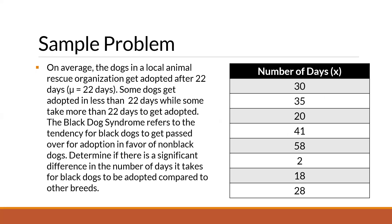So I adopted this problem from the textbook of Andrew Christopher. On average, the dogs in a local animal rescue organization get adopted after 22 days. So that is the population mean. Some dogs get adopted in less than 22 days, while some take more than 22 days. The black dog syndrome refers to the tendency for black dogs to get passed over for adoption in favor of the non-black dogs. Determine if there is a significant difference in the number of days it takes for black dogs to be adopted.